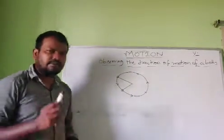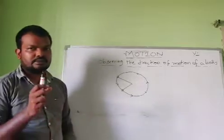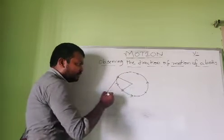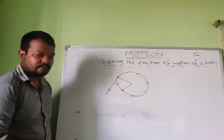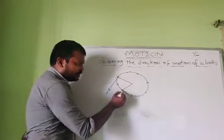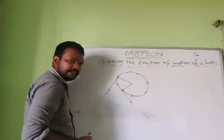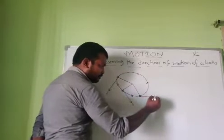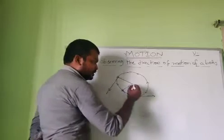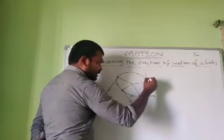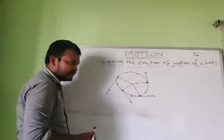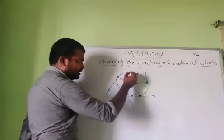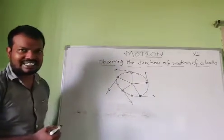Suppose if I leave the ball while rotating, at one point — suppose the ball is released at this point — then the ball will go in this direction. If I leave the ball at this point, then the ball will go in this direction. If I leave the ball at this point, then the ball will travel in this direction, which is nothing but a straight line. So if I leave the ball at this point, then at this point also the ball travels in a straight line direction.